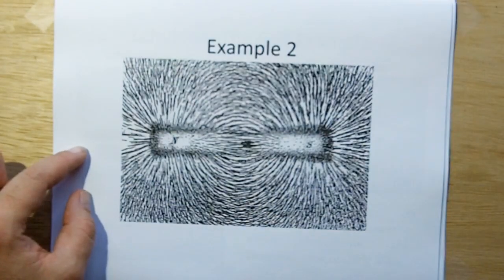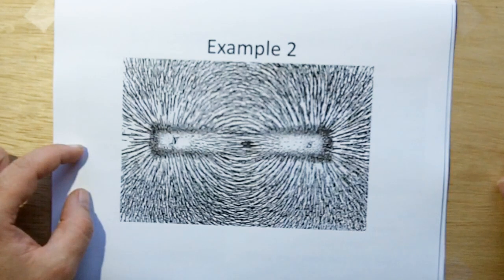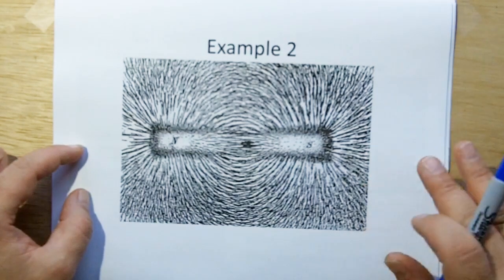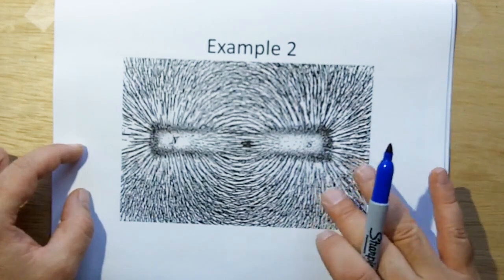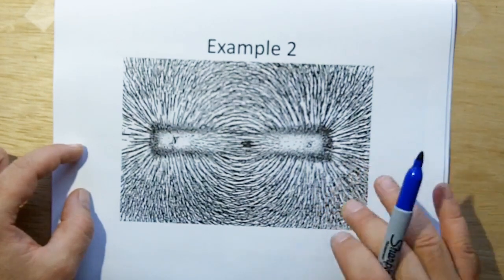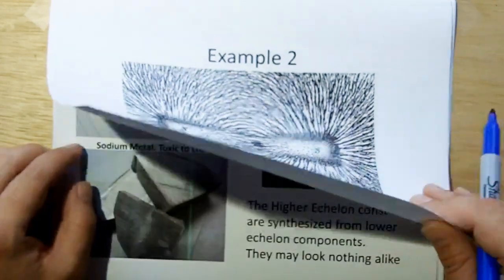Just because the iron filings make this pattern on a magnet does not mean that is the shape of a magnetic field. And I'll put the link for the video that shows you that is the way iron filings react to a magnetic field. That is not the shape of a magnetic field.